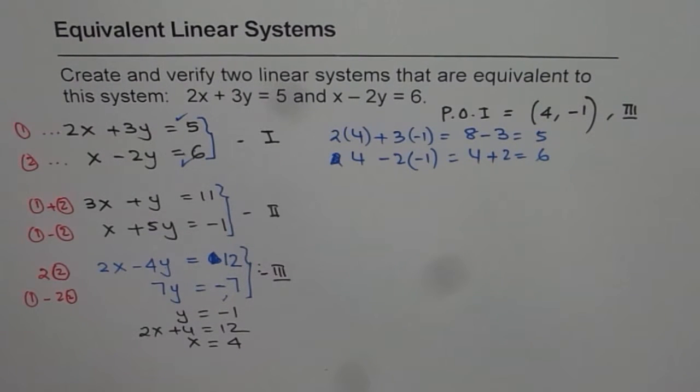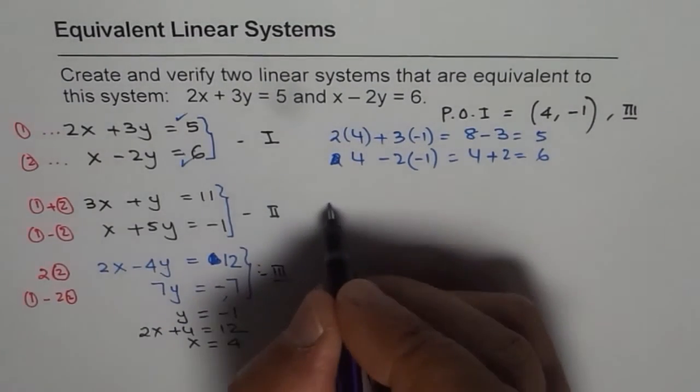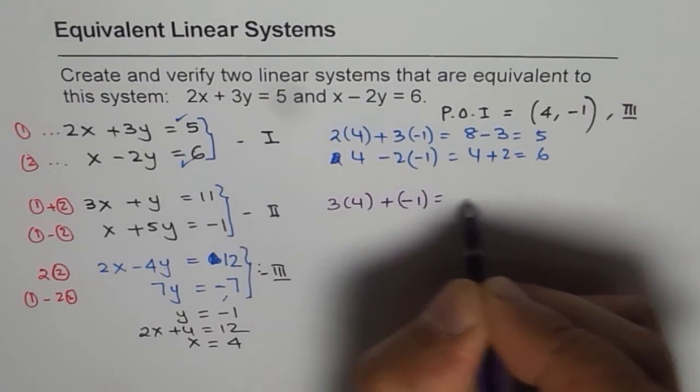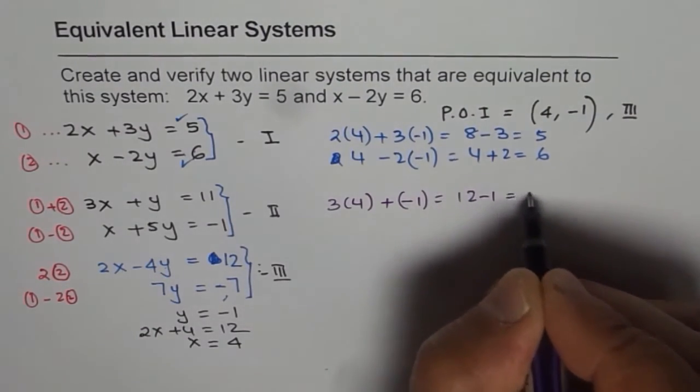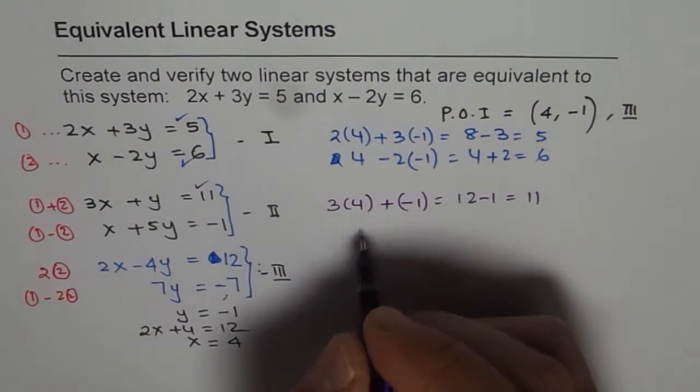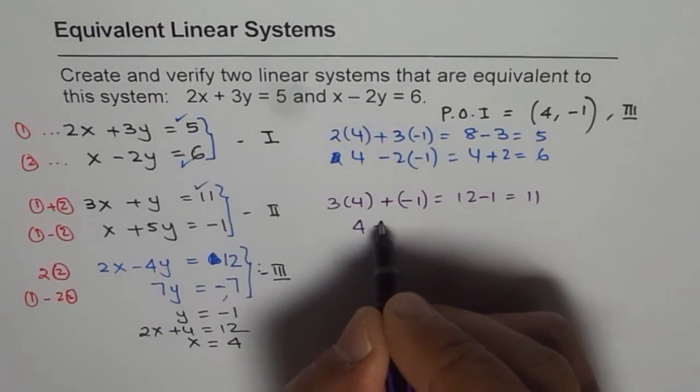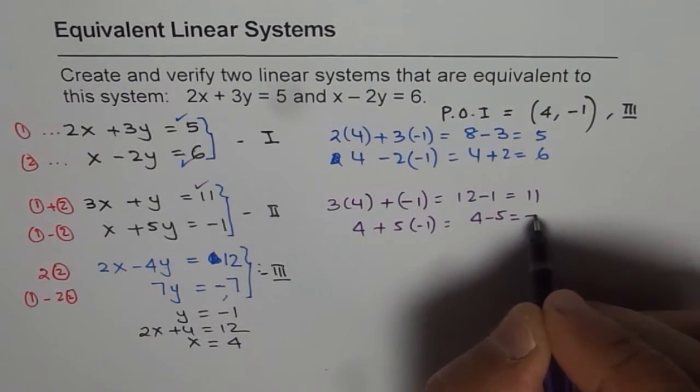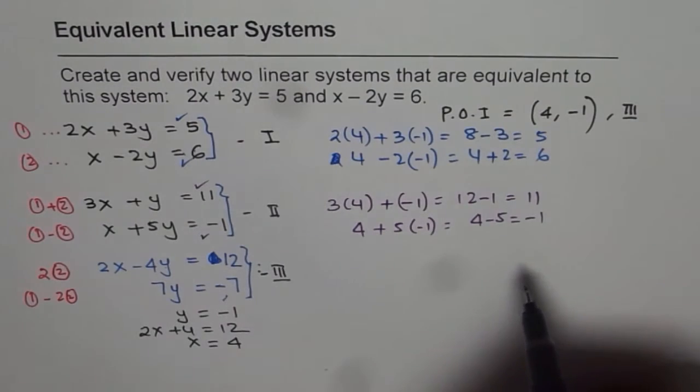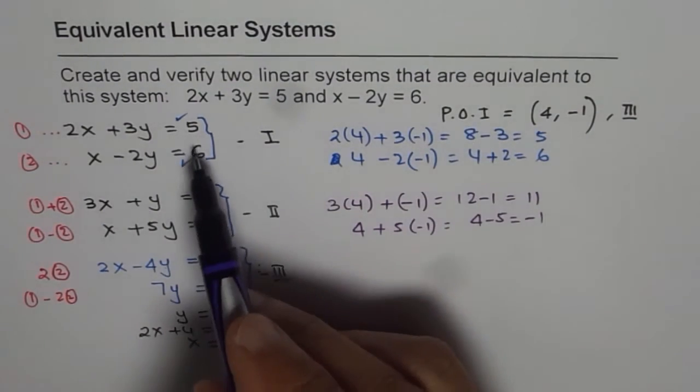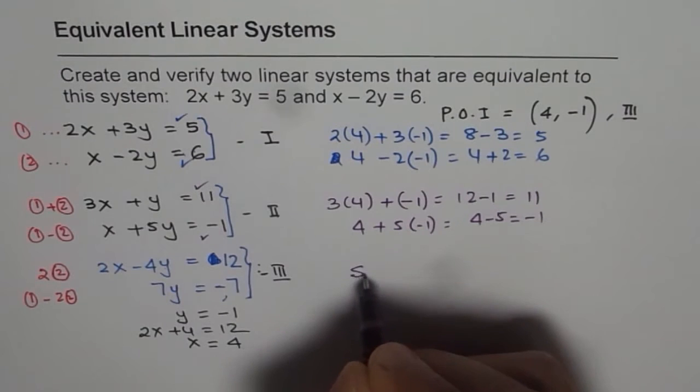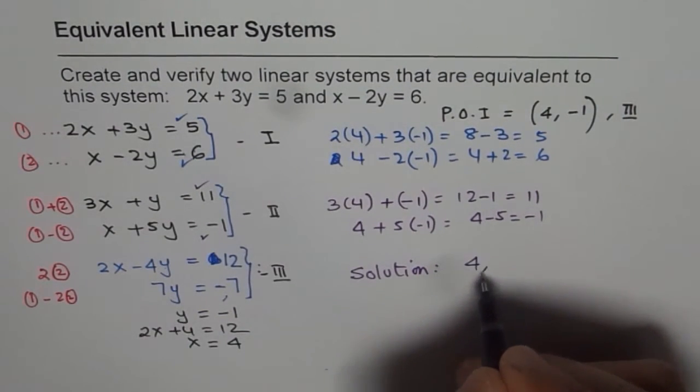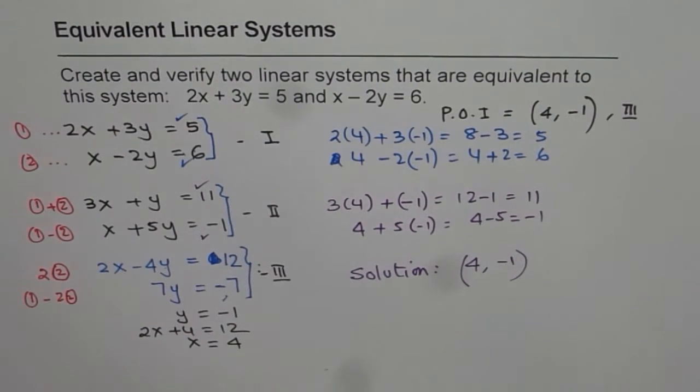You can try for the last one also. 4 for x will give us 3 times 4 plus minus 1 for y, which is 12 minus 1, which is 11. That is correct. And the last one, 4 for x plus 5 times minus 1, 4 minus 5 is indeed minus 1. So what we verified is that the point of intersection for all the three systems is same. They all have same solution and the solution for our linear systems is the point 4 minus 1.